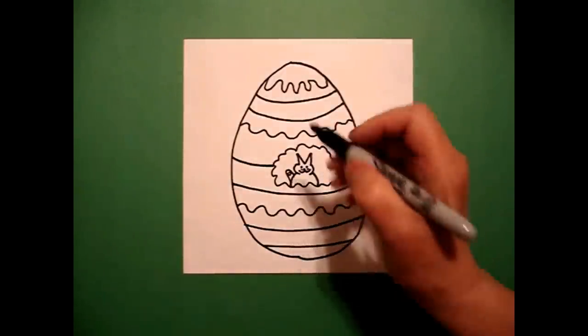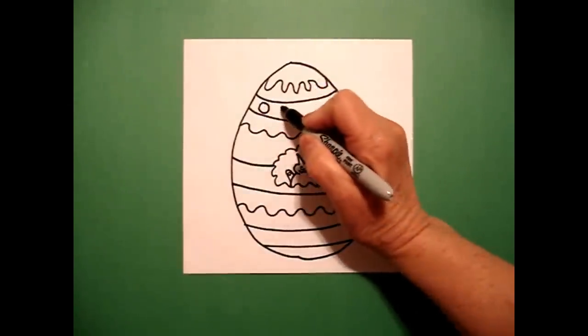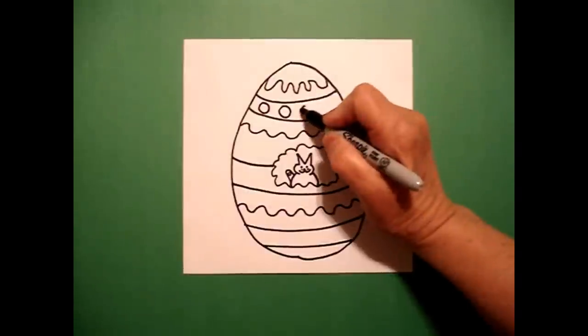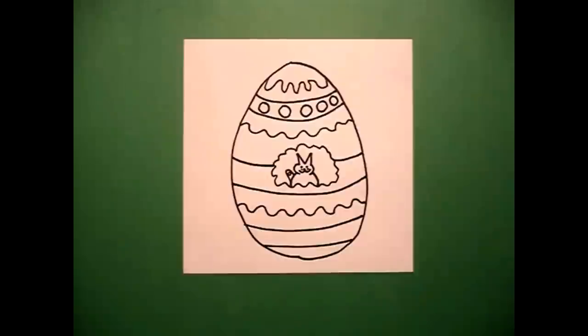But these are the ones I'm using today. Inside this band, I'm going to put one, two, three, four, five baby circles.